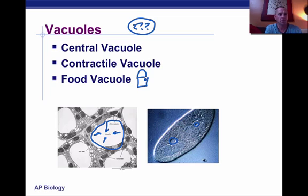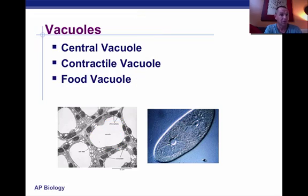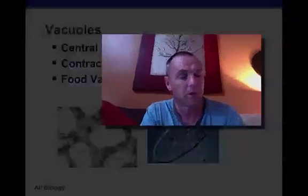So it wouldn't survive. Another type of vacuole is a food vacuole, and the food vacuole does exactly what you think it would do — it holds food. So this is just a brief overview of the endomembrane system. I hope this helps you, and I will be back to talk to you soon.